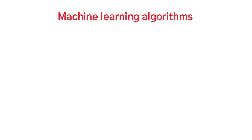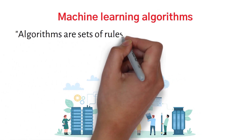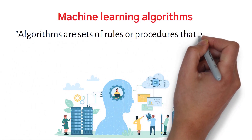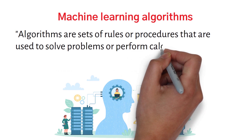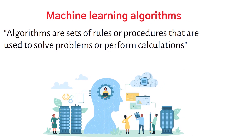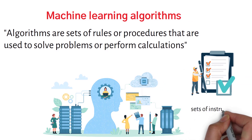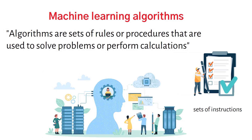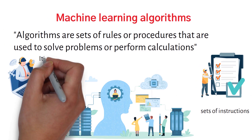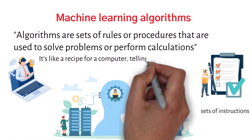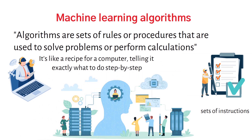Machine learning algorithms. Algorithms are sets of rules or procedures used to solve problems or perform calculations. Algorithms are basically sets of instructions that a computer can follow to solve a problem. It's like a recipe for a computer, telling it exactly what to do step by step.